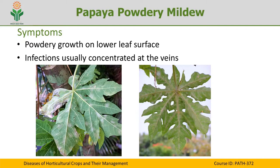Apart from leaves and unripe fruits, the pathogen is also capable of causing powdery mildew on other plant parts like petioles, pedicels, and peduncles. The disease is seen as specks or water-soaked specks on the lower surface of the leaf, and under humid conditions you can observe the development of white powdery growth on the lower surface.